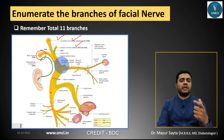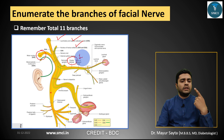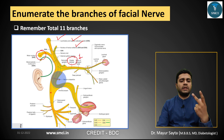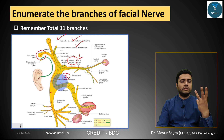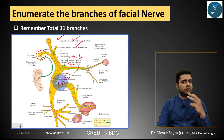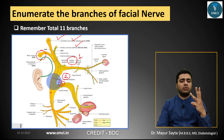The nerve then goes into the inner ear and then into the middle ear. In the middle ear it gives two branches: the nerve to stapedius — the second branch — and the chorda tympani, the third branch, which carries taste sensation from the anterior two-thirds of the tongue. So three branches have been covered so far.